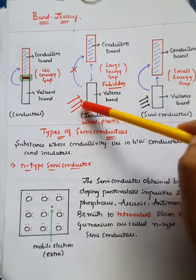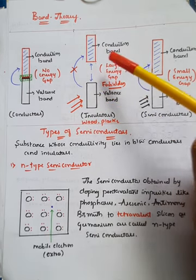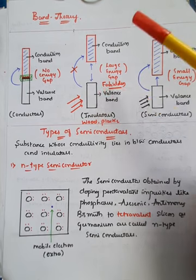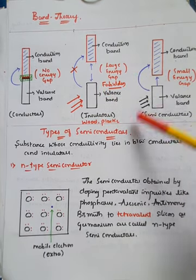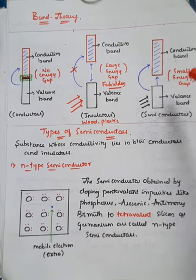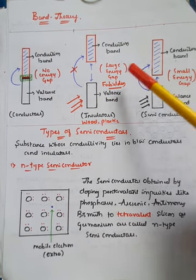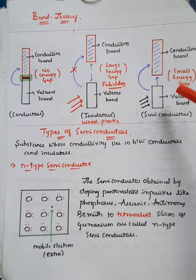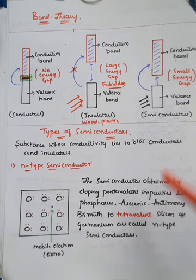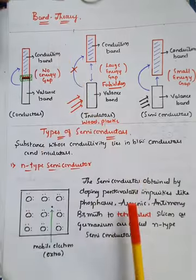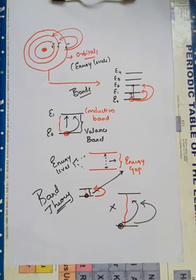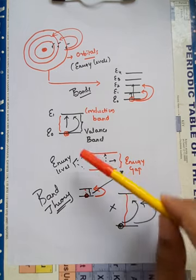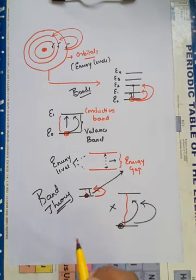For a three-mark question, draw the diagram and explain: in conductors the electron can jump from valence band to conduction band because there is no energy gap; in insulators the electron cannot jump even on application of external force or external electrical field because there is a large energy gap known as the forbidden energy level; in semiconductors the energy gap is too small compared to insulators, so on application of external energy or electrical field, the electron can jump from valence band to conduction band. Band theory is completely explained on the basis of energy levels present in atoms.